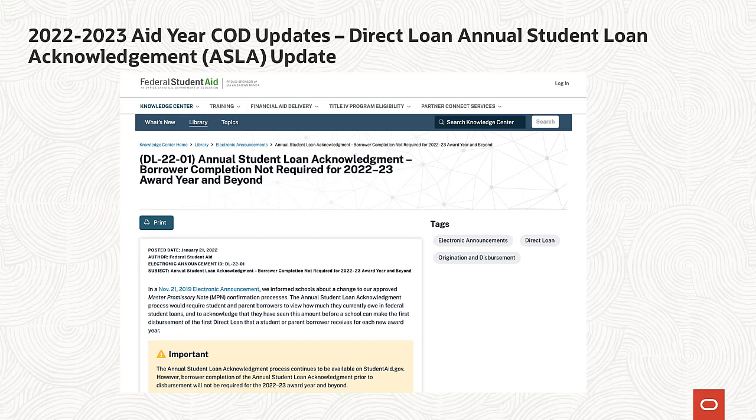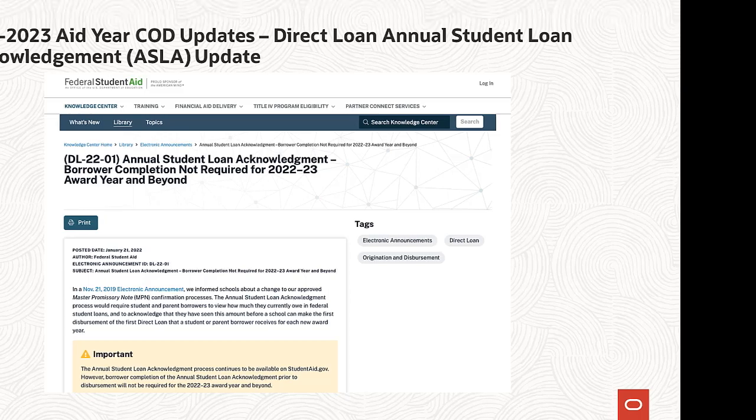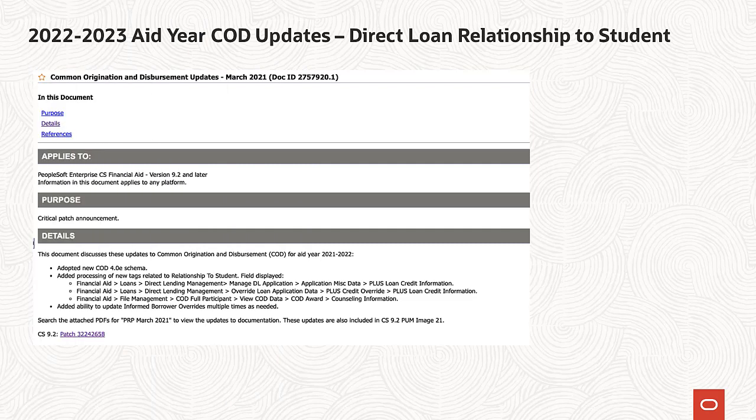As indicated in the Dear Colleague Letter DL 22-01, the Annual Student Loan Acknowledgement Borrower Completion will not be required for the 2022-2023 award year or beyond. The authorization and disbursement COBOL processes have been updated to no longer check for the completion of the Annual Student Loan Acknowledgement. When an individual applies for a PLUS loan on studentaid.gov, they are required to indicate their relationship to the student as part of the application. The CRSP file sent to schools will include this value, and the ability to load and display this updated file was delivered in PUM Image 21.